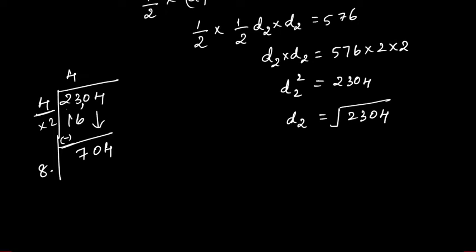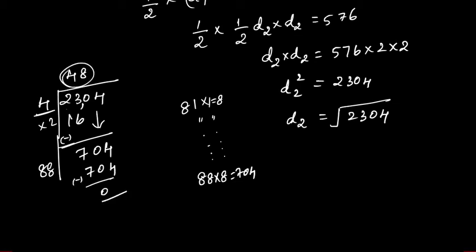Try 81 into 1. When you continue like this you will get 88 into 8 equals 704. So the square root of 2304 is 48, and the unit of measurement is centimeter, so you will get 48 centimeter.